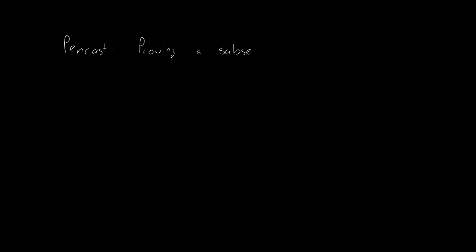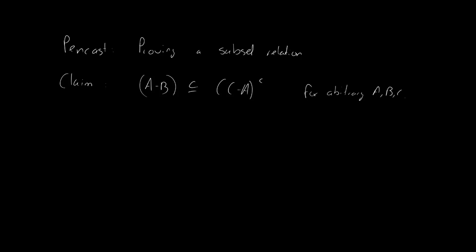Hi there and welcome to another pencast for the course Reasoning and Logic. This one is about proving subset conditions. For our example today we're going to prove that A minus B is a subset of the complement of C minus A, for arbitrary sets A, B, and C.